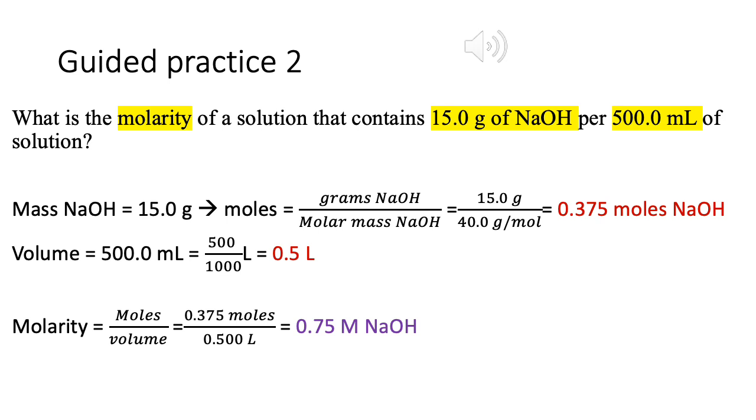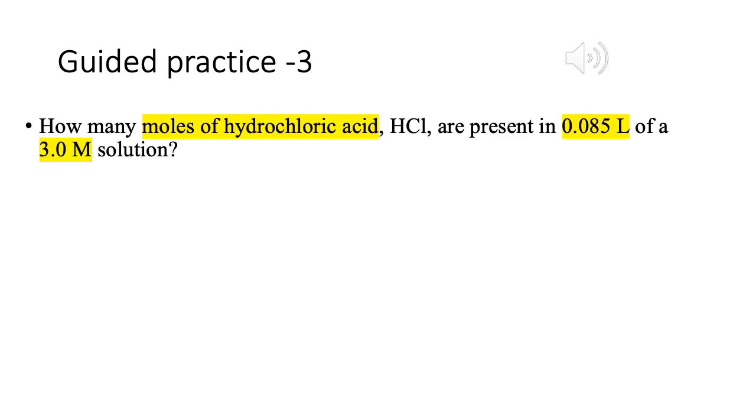So when we're talking about 15 grams of NaOH in 500 milliliters of a solution, we're talking about it having a molarity or strength of 0.75 molarity. Guided practice number three. Question says, how many moles of hydrochloric acid are present in 0.085 liters of a 3.0 molarity solution?